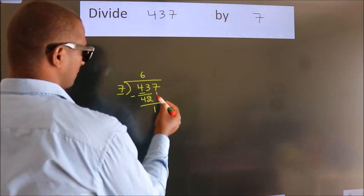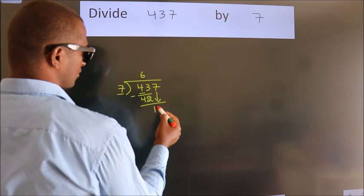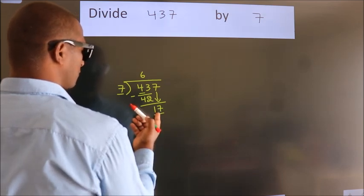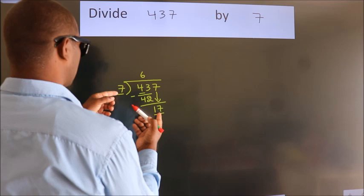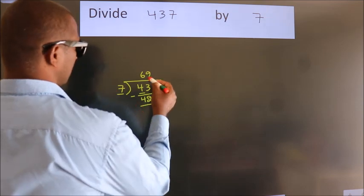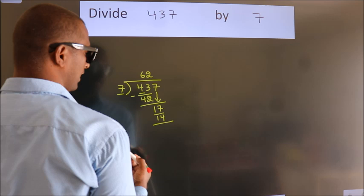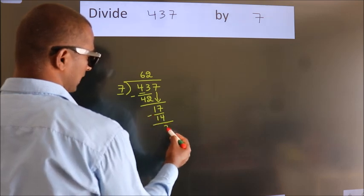After this, bring down the beside number. So, 7 down, giving us 17. A number close to 17 in the 7 table is 7×2=14. Now we subtract and get 3.